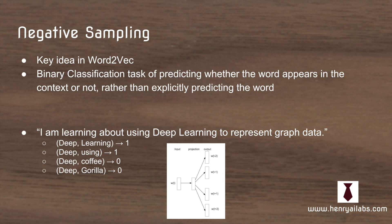So in the sentence, I am learning about using deep learning to represent graph data. Around deep, learning and using would both be a correct label and coffee and gorilla would be negative labels because they don't appear in the context.